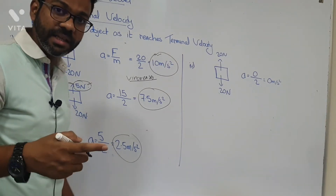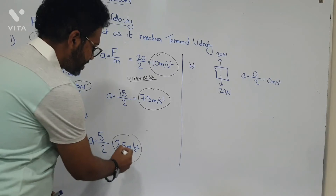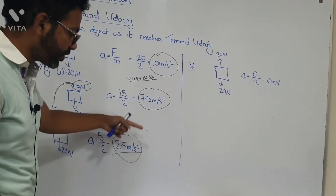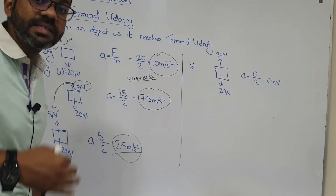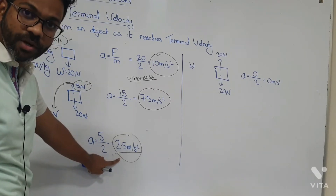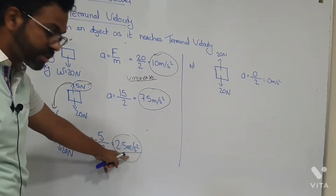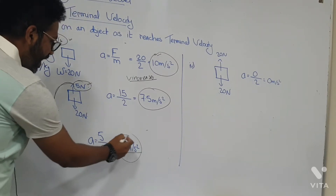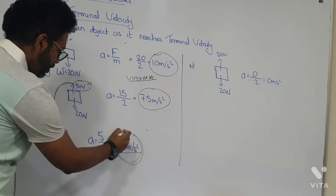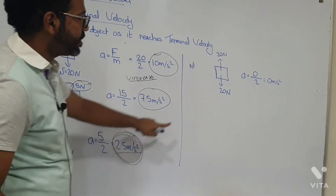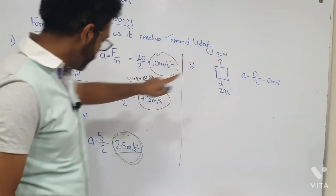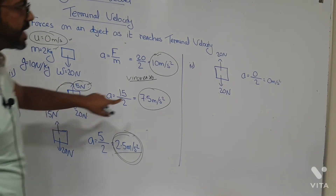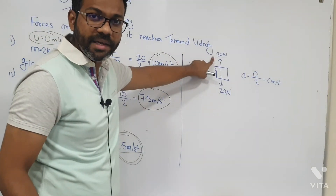An acceleration of 2.5 m/s² means the object's velocity is still increasing at 2.5 metres per second every second. As it is still accelerating, the air resistance increases further — it was 15 Newtons, now it has increased to 20 Newtons — because the velocity was still increasing.